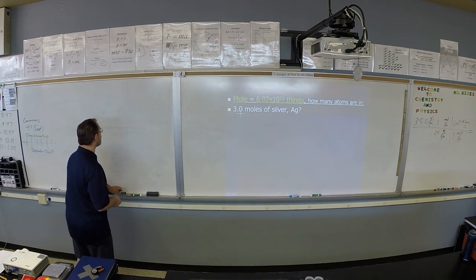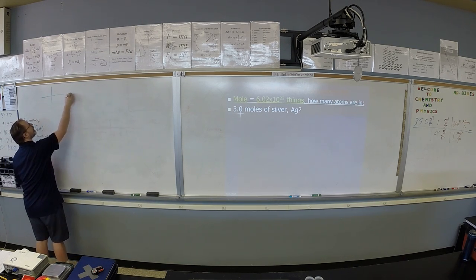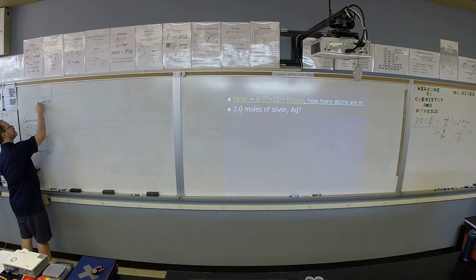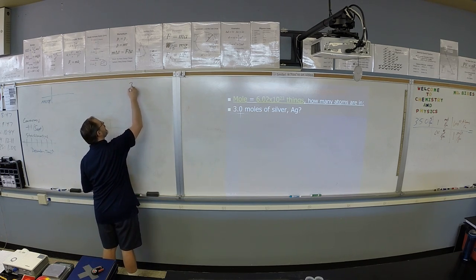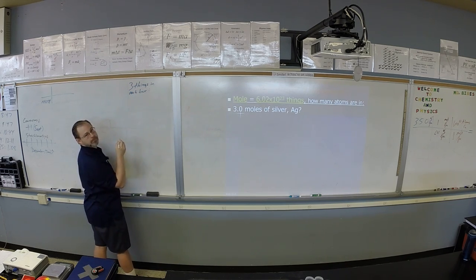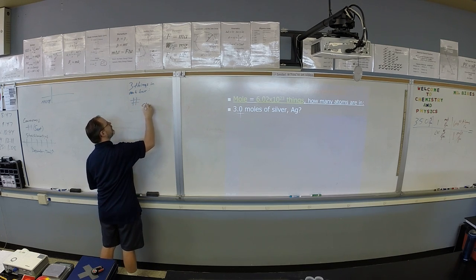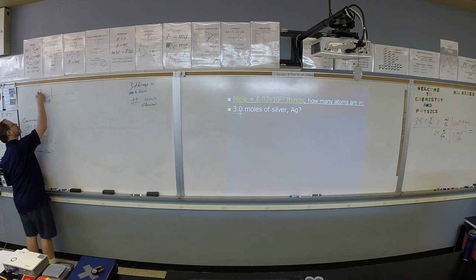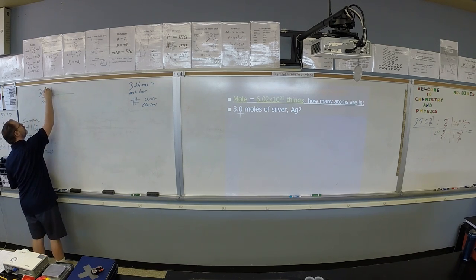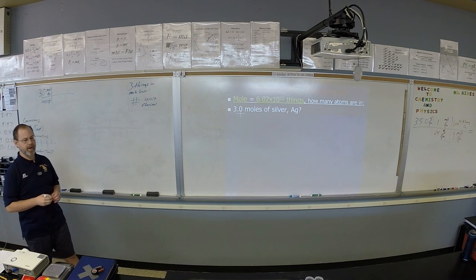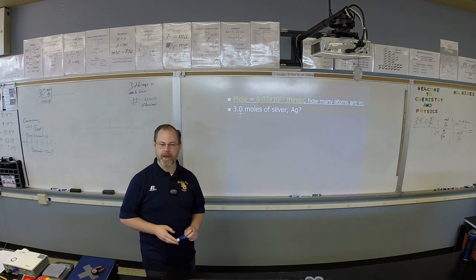Let's jump right in. We want to know how many atoms are in three moles of silver. And to do that, we're going to start with our T-chart just like before. Once again, nothing goes in this box. And in each box, there's three things. The number, the chemical, and the unit. So, three things in each box. The number we're starting with is 3.0, and the unit we're starting with is mole, and the chemical is Ag. Three moles of Ag.